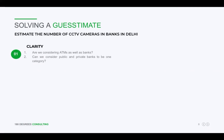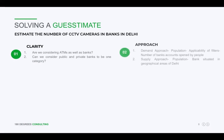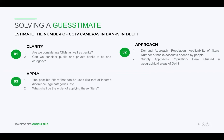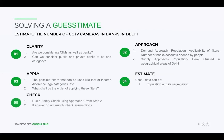I'll now summarize the guesstimate. The first step was gaining clarity — she asked two preliminary questions: are we considering ATMs, and can we consider public and private banks as one category? The second step was finding the approach — she chose the demand side approach, finding the number of bank accounts opened by people, versus the supply side approach of counting banks by geographical area. The third was applying filters — age and income. The fourth was using population data and making correct assumptions and estimations. The fifth was a sanity check using the supply side approach; if the answer didn't match, she could revisit her assumptions.